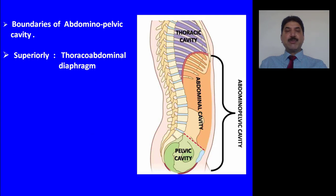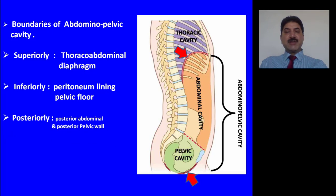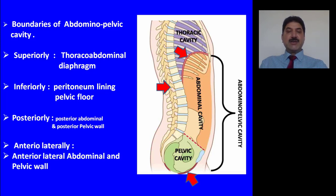Boundaries of abdominal pelvic cavity: this cavity is bounded superiorly by the thoracoabdominal diaphragm, inferiorly by the peritoneum lining the pelvic floor. Posteriorly it is bounded by the posterior abdominal wall in the abdominal region and the posterior pelvic wall in the pelvic region. Anteriorly it is bounded by the anterior lateral abdominal and pelvic walls.